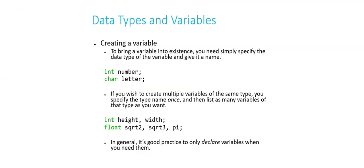If you find yourself in a situation where you need to create multiple variables of the same type, you only need to specify the type name once. Then just list as many variables of that type as you need. I could, for example, say int height semicolon, new line, int width semicolon. And that would work. But I'm allowed to, thanks to C syntax, consolidate it into a single line. Int height comma width semicolon. And it's the same thing. I've created two variables, both of which are capable of holding integer type values.